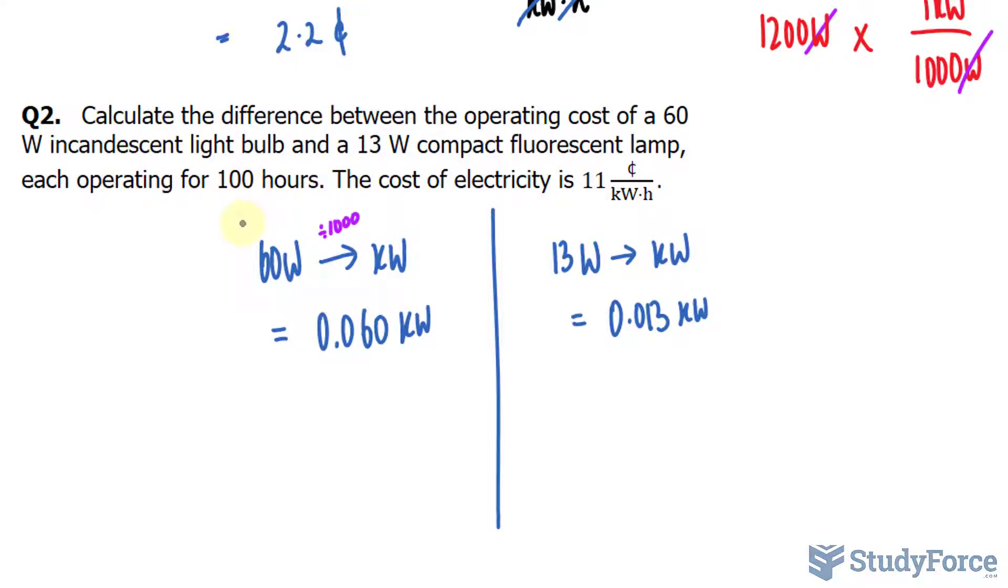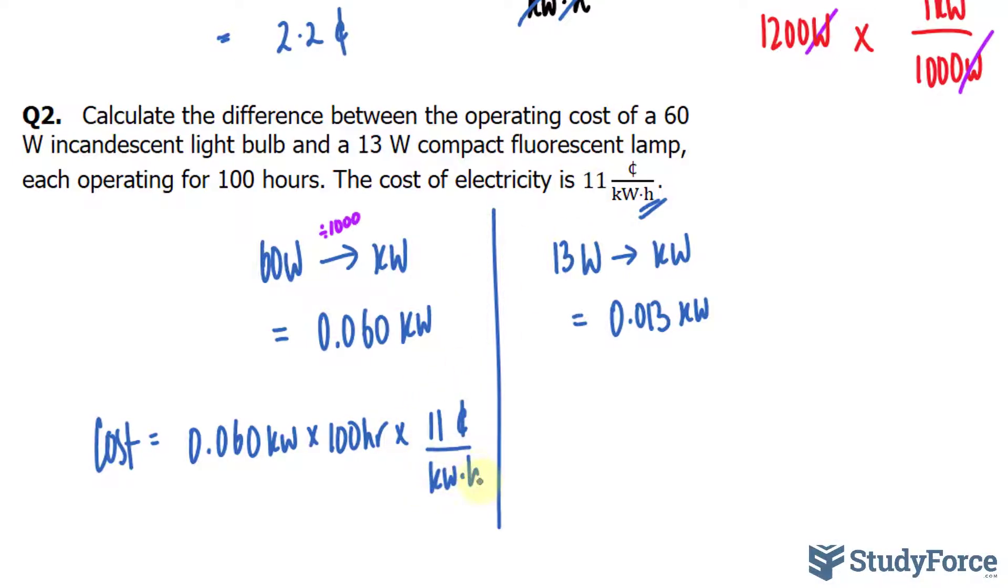Furthermore, operating time is in hours, which is good for us because, remember, the rate is in hours, so it's one less calculation that we have to do. So the cost for the incandescent light bulb is 0.060 kilowatts times 100 hours times the rate of 11 cents per every kilowatt hour.